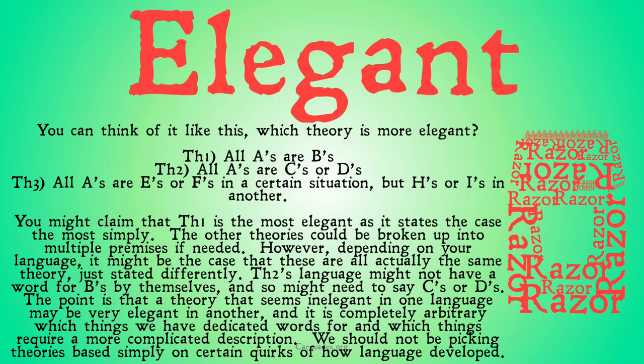To understand this, take a look at these examples. Which theory is the most elegant? Theory 1: all A's are B's. Theory 2: all A's are either C's or D's. And Theory 3: all A's are E's or F's in certain situations, but H's or I's in other situations. You might claim that Theory 1 is the most elegant, because it states the case the most simply. The other theories could be broken up into multiple premises if needed.